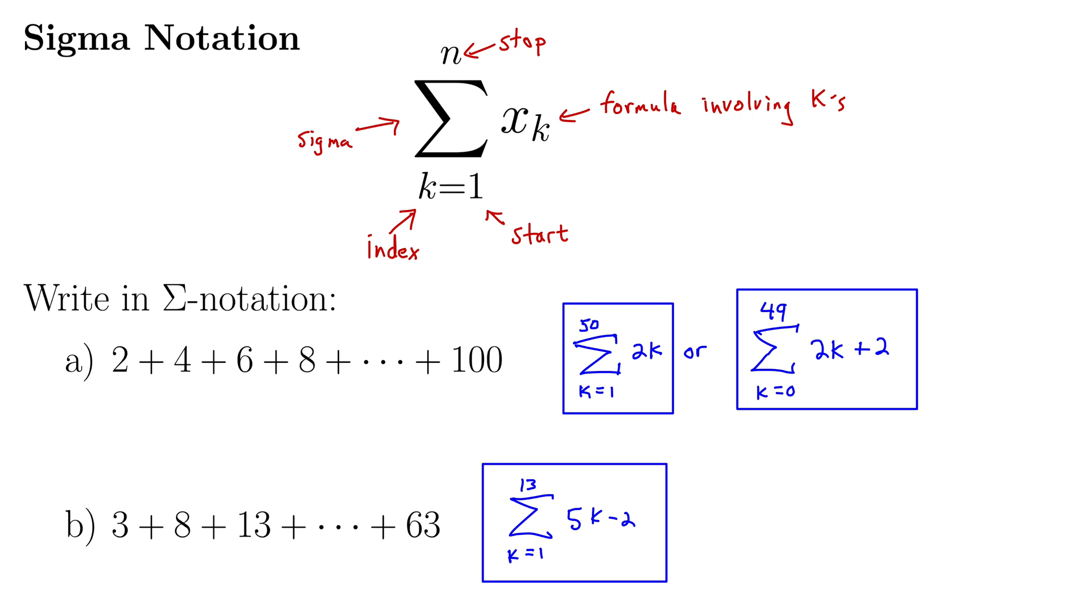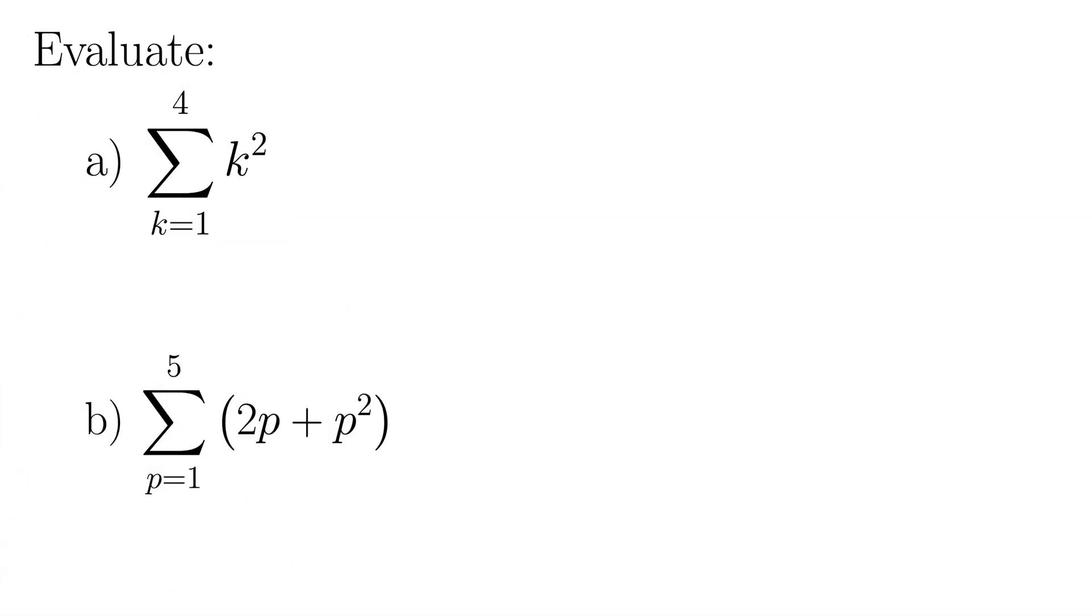Next, let's look at evaluating sums when they're given in sigma notation. So this asks us to evaluate the sums written in sigma notation. For part a, we have the sum as k goes from 1 to 4 of k squared. And it really just comes down to putting in, starting with 1, putting it in, evaluating it, and stopping at 4.